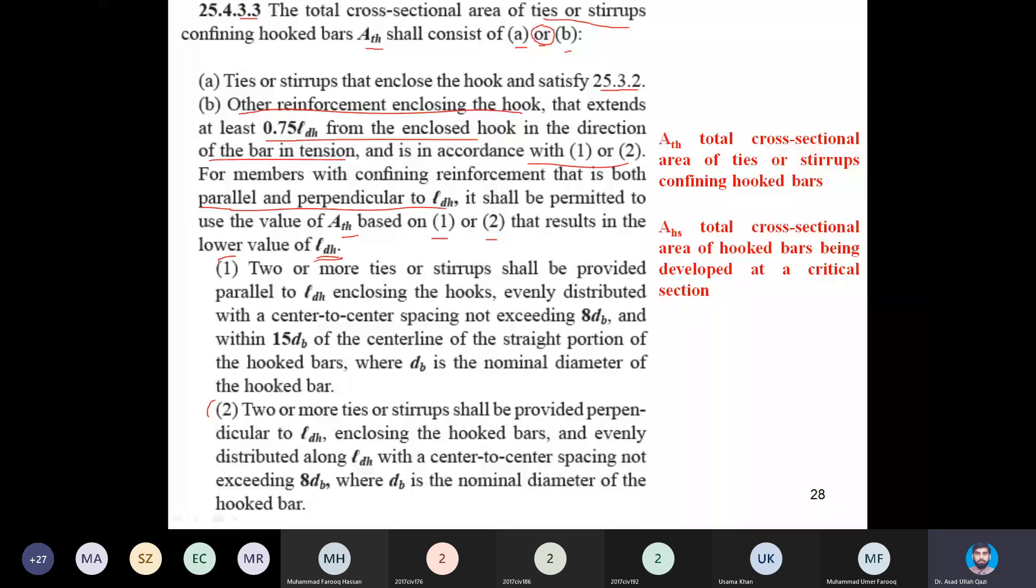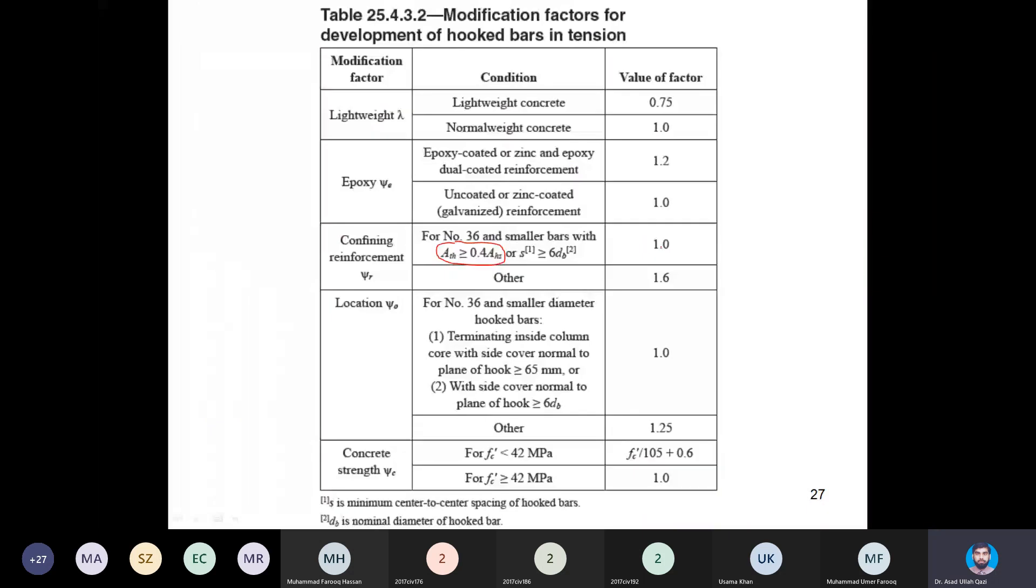It means these factors are actually giving you a benefit that you can reduce the LDH, because if these factors are fulfilled, this kind of confinement is present. For number 36 or smaller bars, you will keep the hook bar development length unenhanced and you will take it as 1. But if this confinement is not present, you need to give a big jump to the LD and you need to multiply that hook bar LD with 1.6.